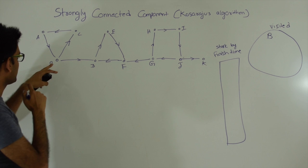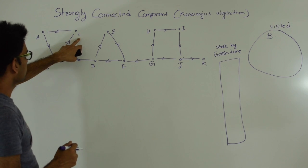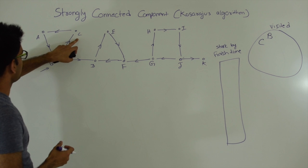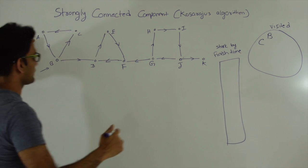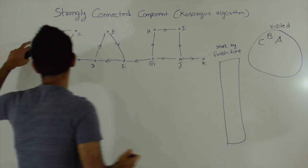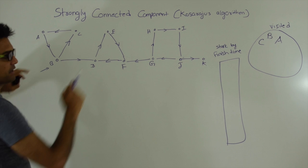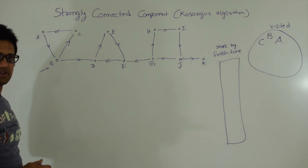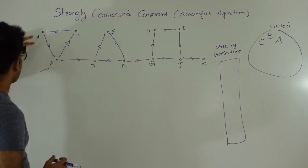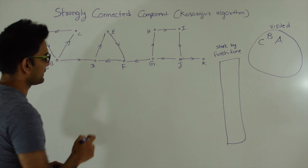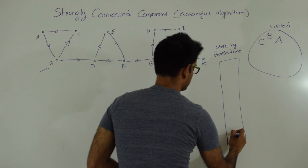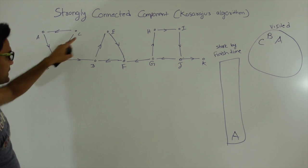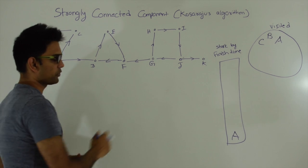Then we explore the children of B. Let's say we go to C — C is not in visited, so we go to C and put C in visited. Then we explore the children of C. There's only one child, A, and A is not in visited so we put A in visited. Then we explore children of A, which is B, but B is already visited. So A is done — A is the first vertex to finish, so we push A into the stack. Then we go back to C and C has no other children, so C is done and we push C into the stack.